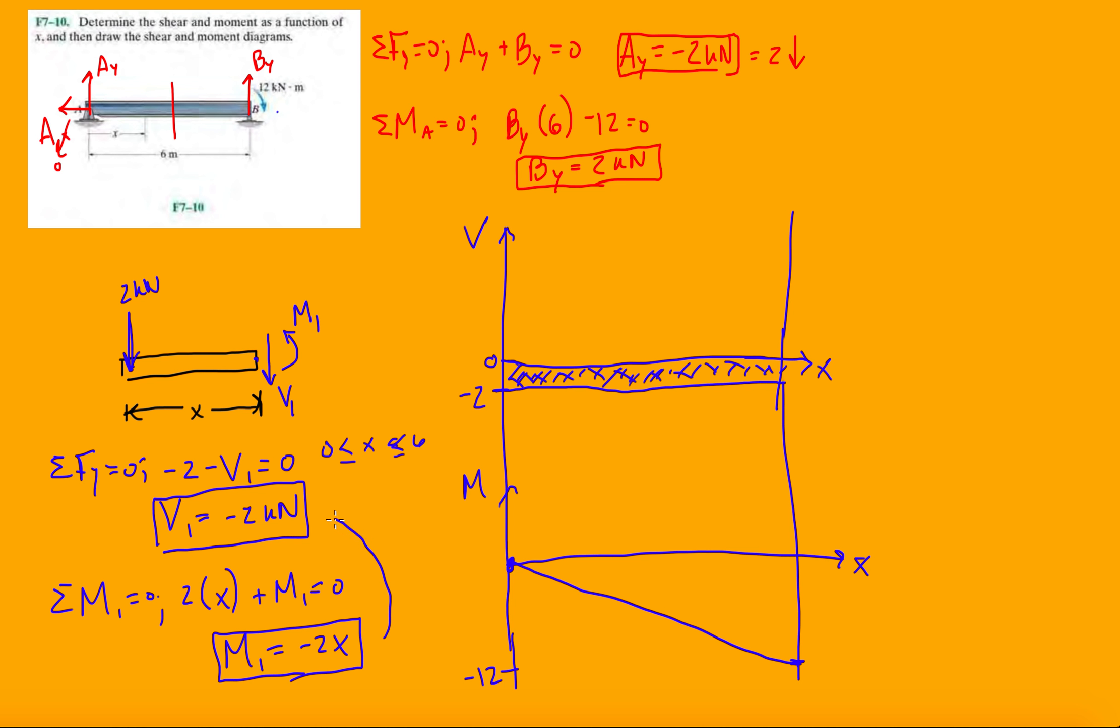And, then, if we check our derivative here, dM/dX, we get back negative 2 for the shear. And, then, we're done. Then, we're done with this problem. So, this one was pretty easy. No distributed load. Just, the only thing acting on this beam was just a moment. So, that was pretty easy.